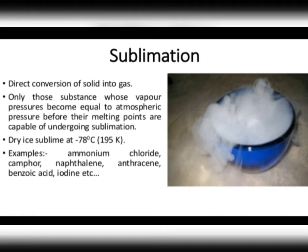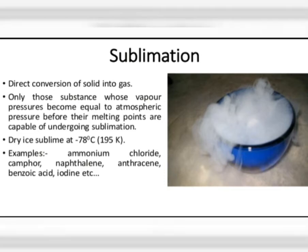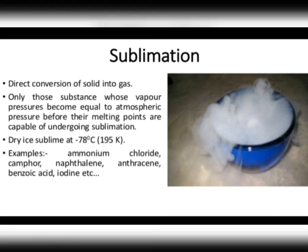So sublimation involves two things: the changing of a solid directly into vapor, and the changing of vapor directly into solid. The solid substance which undergoes sublimation is said to sublime. The solid obtained by cooling the vapors is called the sublimate. Sublime refers to the solid converting to vapor, and sublimate refers to the solid obtained from cooling the vapors.